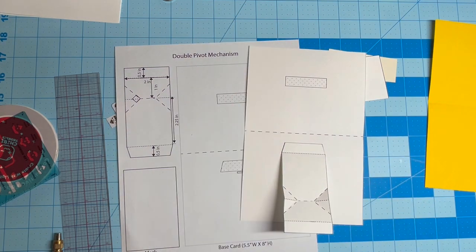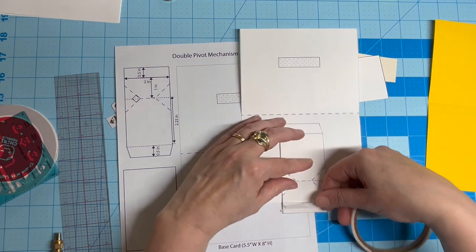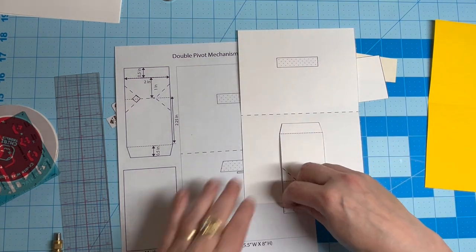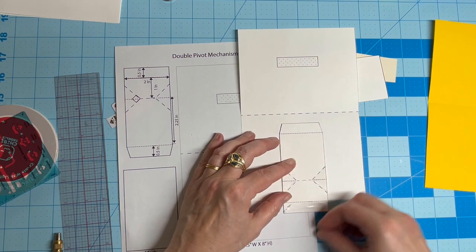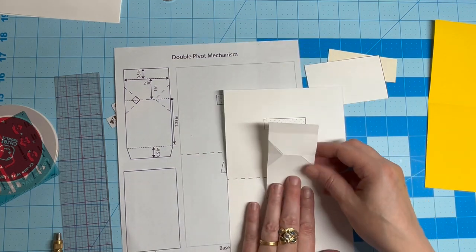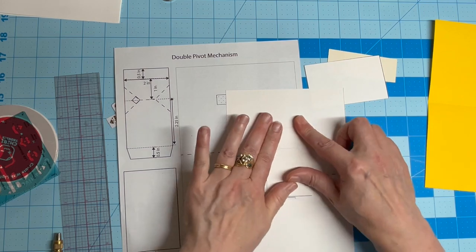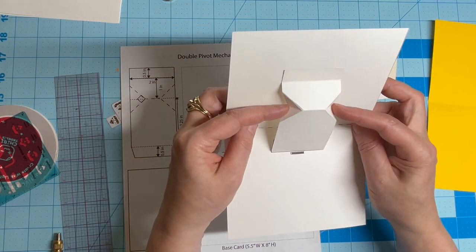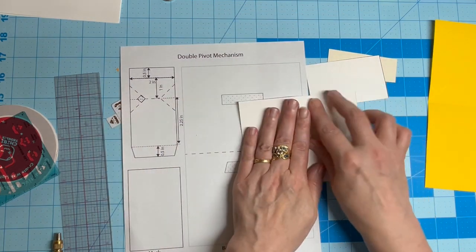Next, add adhesive to the back side of the top glue tab and press it down so that the mechanism lies completely flat against the base card. Now, when you fold the base card in half, the angles should fold inward.